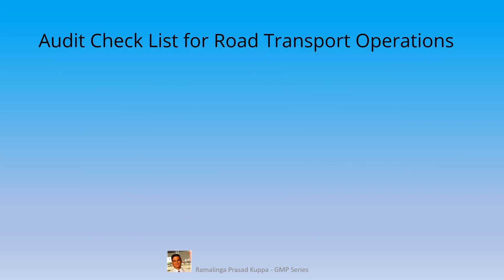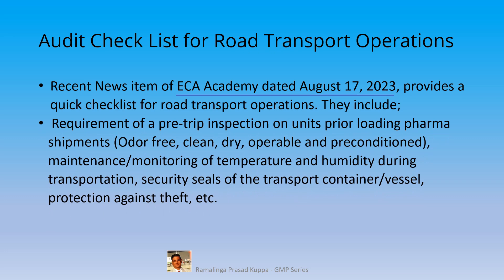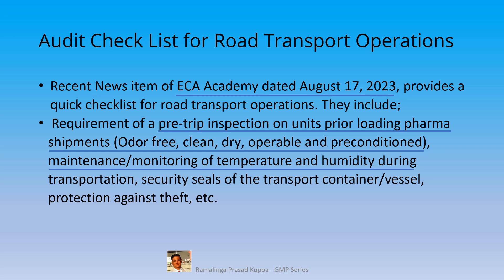Audit checklist for road transport operations: a recent news item from ECA Academy dated August 17, 2023 provides a quick checklist for road transport operations. Requirements include a pre-trip inspection on units, pre-loading pharma shipments — such as odour-free, clean, dry, operable and pre-conditioned — maintenance, monitoring of temperature and humidity during transportation, security seals of the transport containers, and vessel protection against theft. This is only an extract from that newsletter; you may go through it for more details.